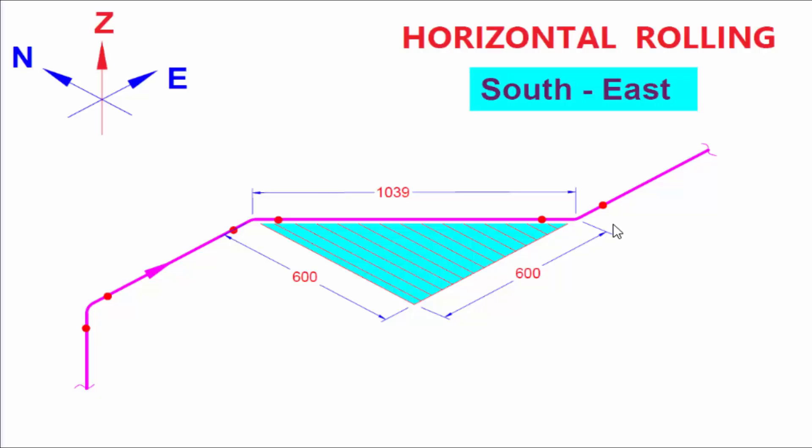So this rolling in between south and east it's coming. Now clear. We are rolling, it's in between south and east. It's going to south 600 amount and east 600 amount. So you have to connect this line in between, 1039 amount. You have to connect the rolling. This is the rolling area.